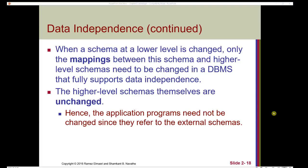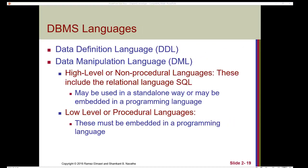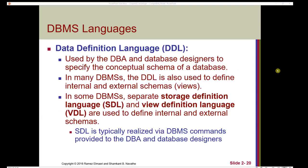When a schema at a lower level is changed, only the mappings between this schema and higher-level schemas need to be changed in a DBMS that fully supports data independence. The higher-level schemas themselves are unchanged. Hence, application programs need not be changed since they refer to the external schemas. To define what's in the database, we use a data definition language, or DDL, which includes procedures like adding and dropping tables. We also use a data manipulation language, or DML — high-level or non-procedural languages like the relational language SQL — to communicate with the database.